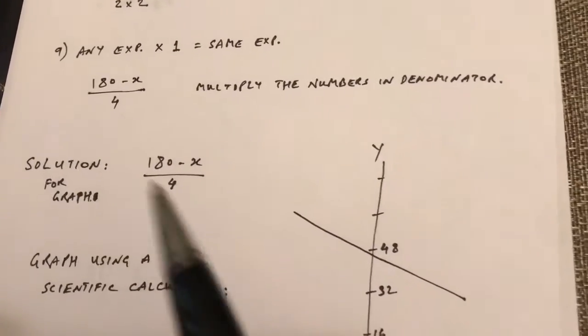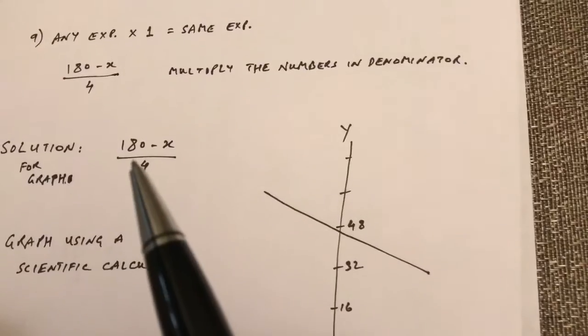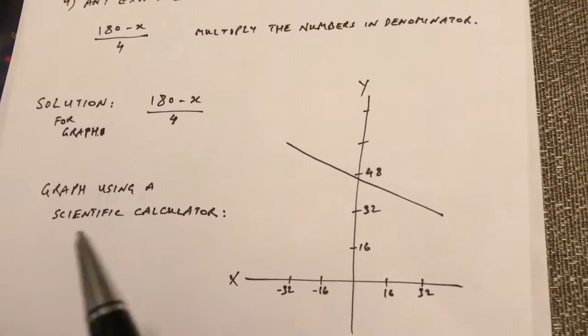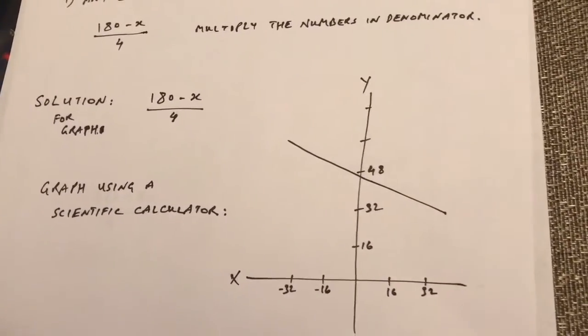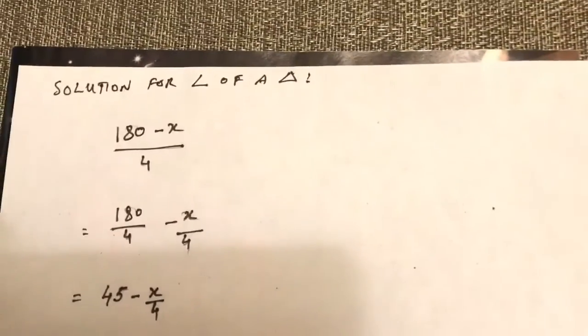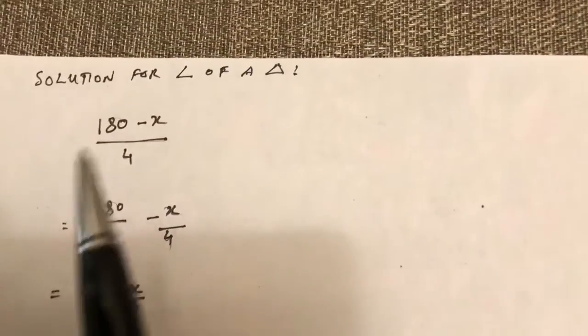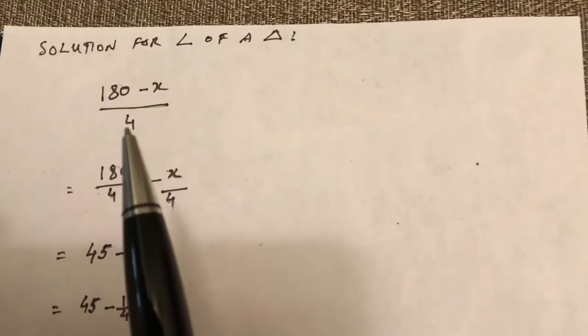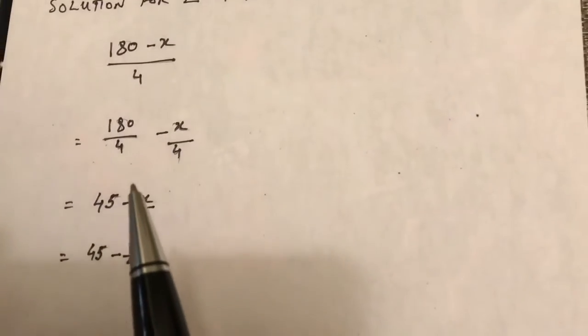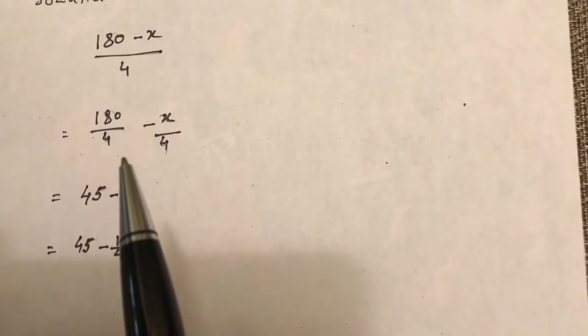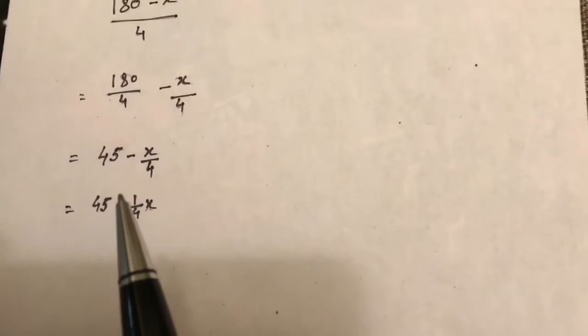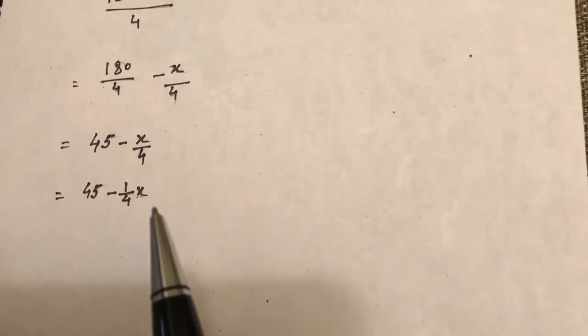This is for the graph purpose, if you want to draw a graph for that using that expression. And you can do the graph using a scientific calculator. If you want to get the solution for angles and triangles, for an angle of a triangle, for example, 180 minus x over 4 can be further simplified as 180 over 4 minus x over 4, which is 45 minus x over 4, and that can be written as 45 minus one-fourth x.